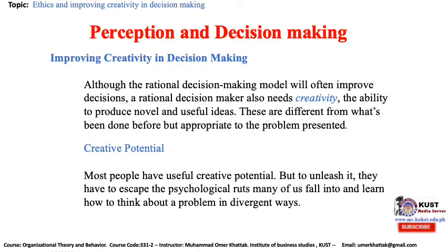Exceptional creativity is scarce. We all know of the creative geniuses in science like Albert Einstein, art like Pablo Picasso, and business like Steve Jobs. Intelligent people and those who score high on openness to experience are more likely to be creative. Other traits of creative people include independence, self-confidence, risk-taking, an internal locus of control, tolerance for ambiguity, a low need for structure, and perseverance.